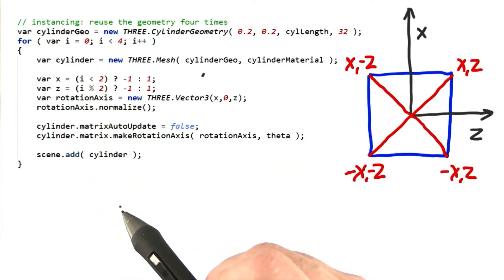I then reused this cylinder's geometry to make each cylinder object. To get the four rotation axes, I realized these formed an X shape. If I could enumerate all four directions in my loop, I'd be done.